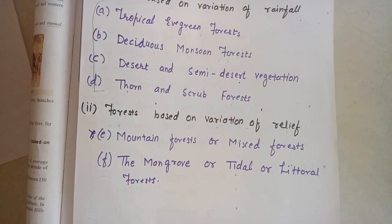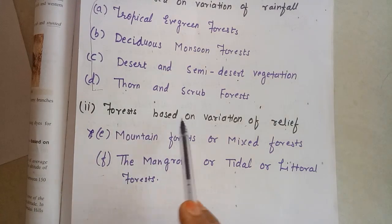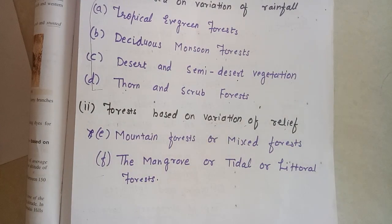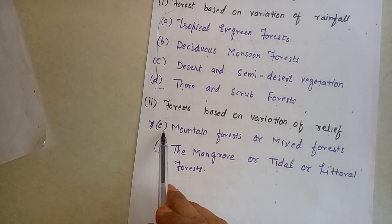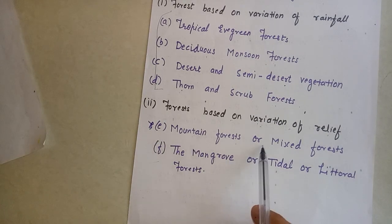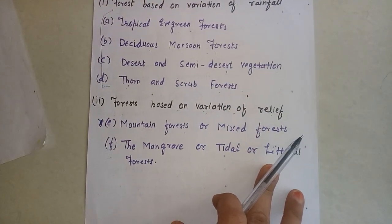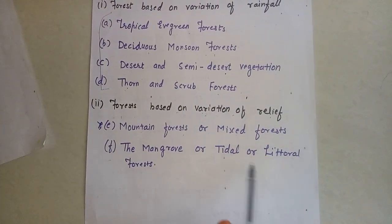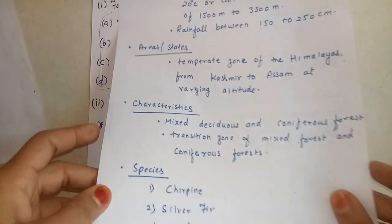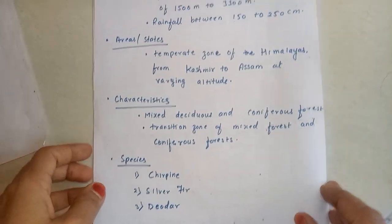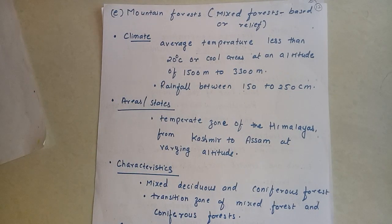Now come to our next part. Forest type B is based on variation of relief. The next point is mountain forest or mixed forest — it is also called mountain forest or mixed forest.